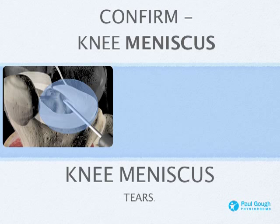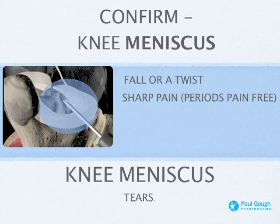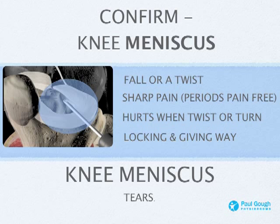The difference between that and the meniscal problem is that meniscal is more sporty — more likely to happen if you're involved in a fall or a twist. It could happen in everyday life, but for example if you've been playing football or basketball, or you've been fell running and twisted sharply, you're likely to damage your meniscus. You'll get sharp pain to start with, but then periods that are pain-free — two or three days without problems, then all of a sudden it'll catch you. It will most likely hurt when you twist and turn. Locking and giving way is a big feature — your knee gets stuck in a position and won't release, or it randomly feels like it's going to give way going up and down stairs.